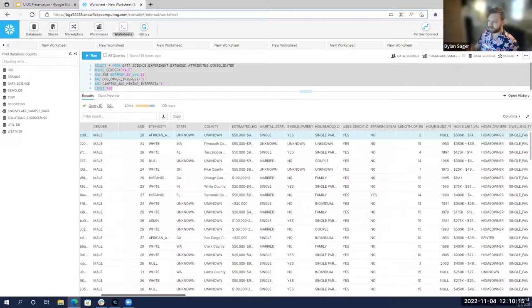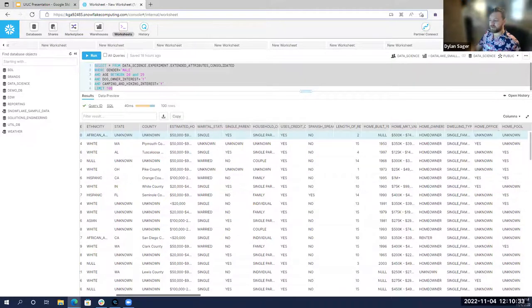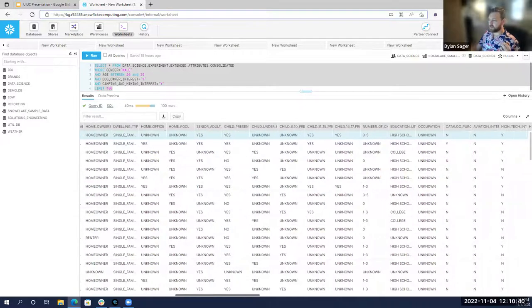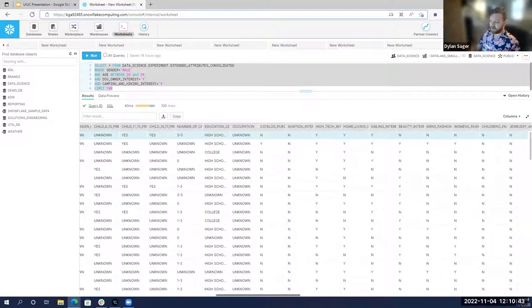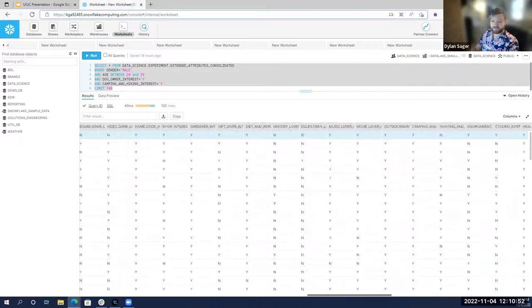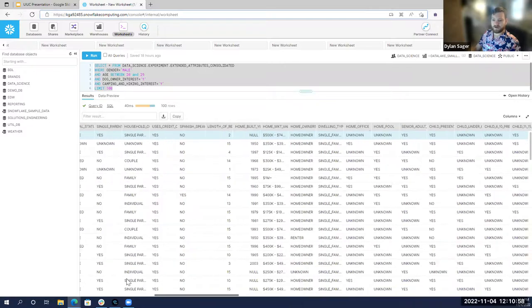You can see some of the fields Bridge can provide. We have a little bit of location data like state and county. We have estimated household income levels, marital status. Do they have a home pool, things about their house, things about if they have children and then all their interests. Are they interested in fashion or sailing or tech or home cooking. A whole multitude of customer level attributes for our clients to select from.